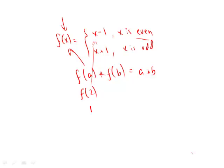Now, let's say b is 3. f of 3, 3 is odd. 3 plus 1 is 4. So f of 3 is equal to 4. So it's interesting. So what happens? Does this equal a plus b? Well, sure. 1 plus 4 is the same as 2 plus 3. And why is that?